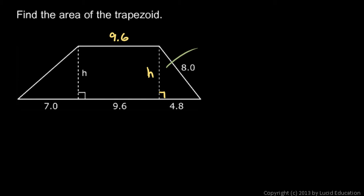I know that h squared plus 4.8 squared will equal 8 squared. So let's write that. The Pythagorean theorem, h² + 4.8² = 8.0². Then subtract 4.8 squared from each side,